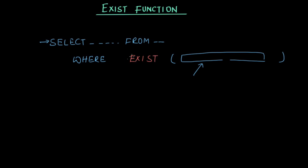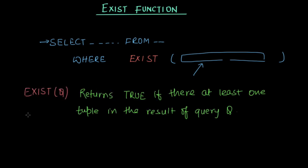The EXISTS function is used to check whether the result of a nested query is empty. If it is empty, the external query will not be executed. If it is not empty, the outer query will be executed. Formally, EXISTS takes an argument q which is a query, and returns true only if query q has at least one tuple in the result. If query q returns an empty result, EXISTS returns false.